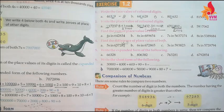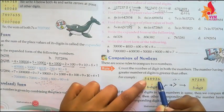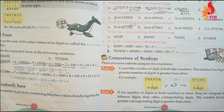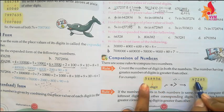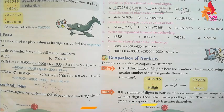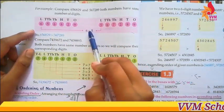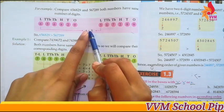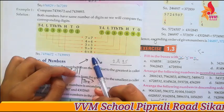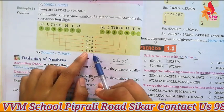After Exercise 1.2, we have comparison of numbers. First we count the digits: whichever number has more digits is greater, and whichever has fewer digits is smaller. For example, a 6-digit number is greater than a 5-digit number. If both numbers have the same number of digits, we compare digit by digit from left to right until we find a difference.